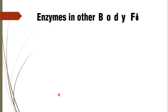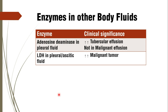Coming to enzymes in other body fluids — here we study pleural fluid, which has two enzymes: adenosine deaminase and lactate dehydrogenase. Both are estimated in pleural fluid in cases of pleural effusion. If adenosine deaminase is increased, it suggests tubercular effusion, possibly due to pulmonary tuberculosis. If lactate dehydrogenase activity is increased in pleural effusion, it indicates malignancy — due to a tumor or secondary metastasis producing LDH in the pleural fluid.